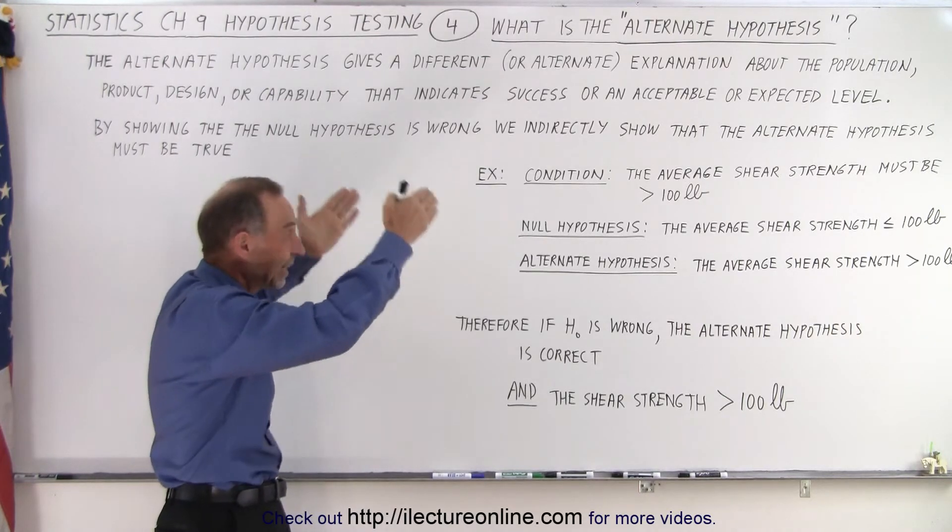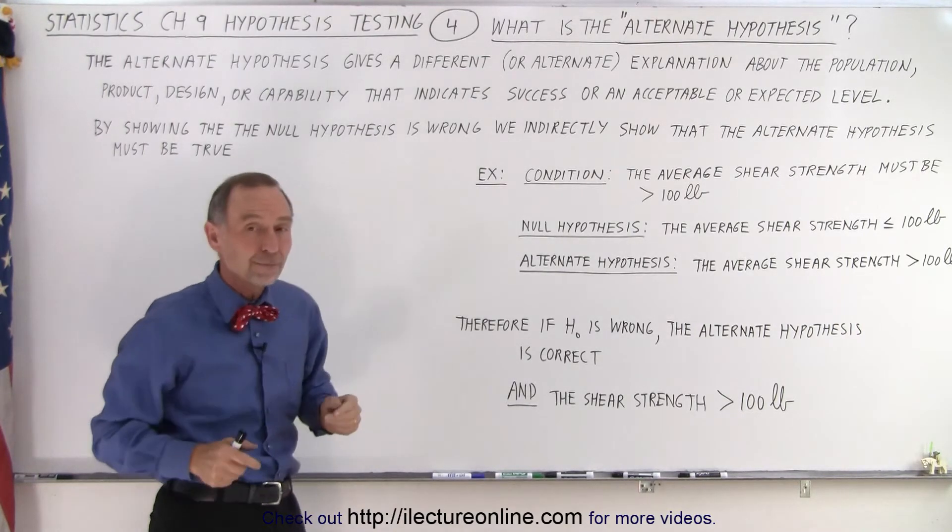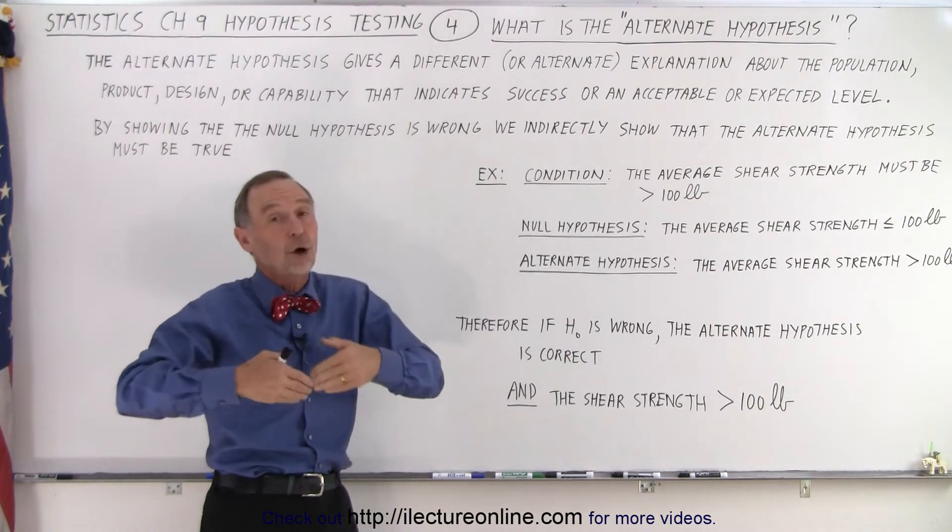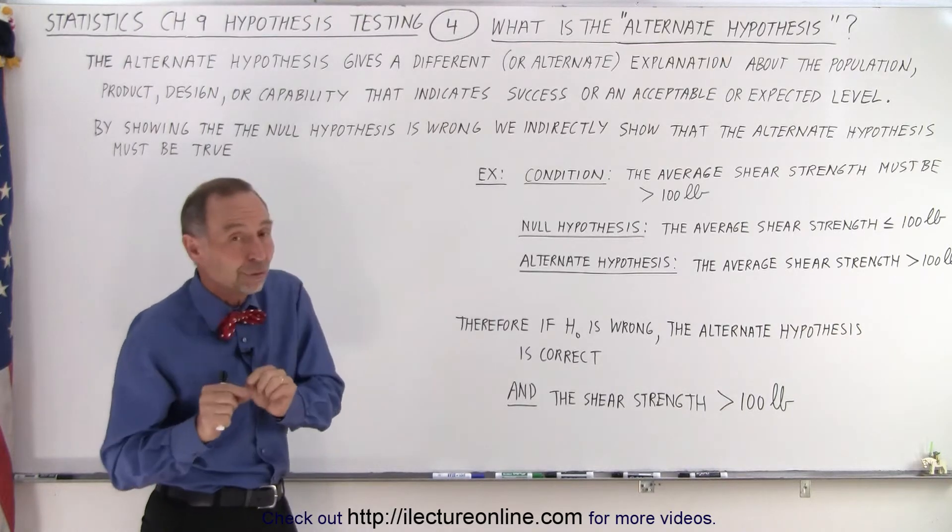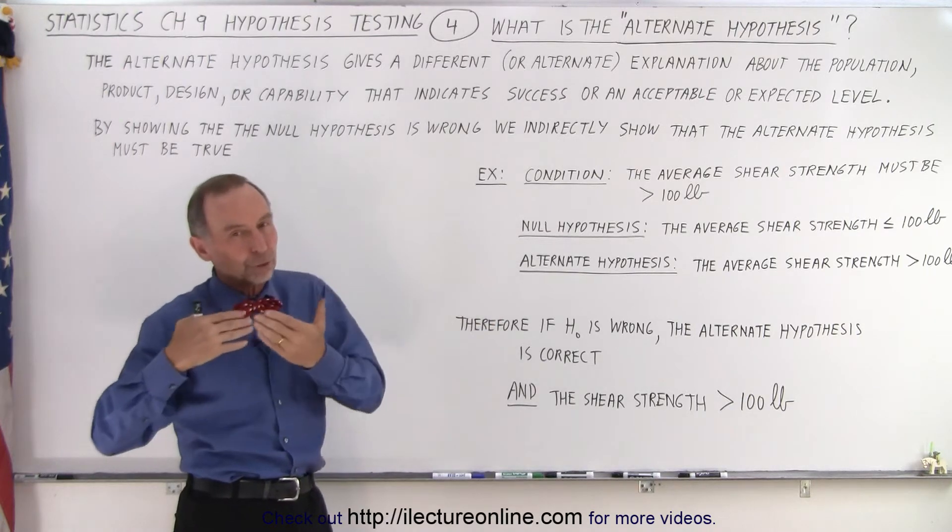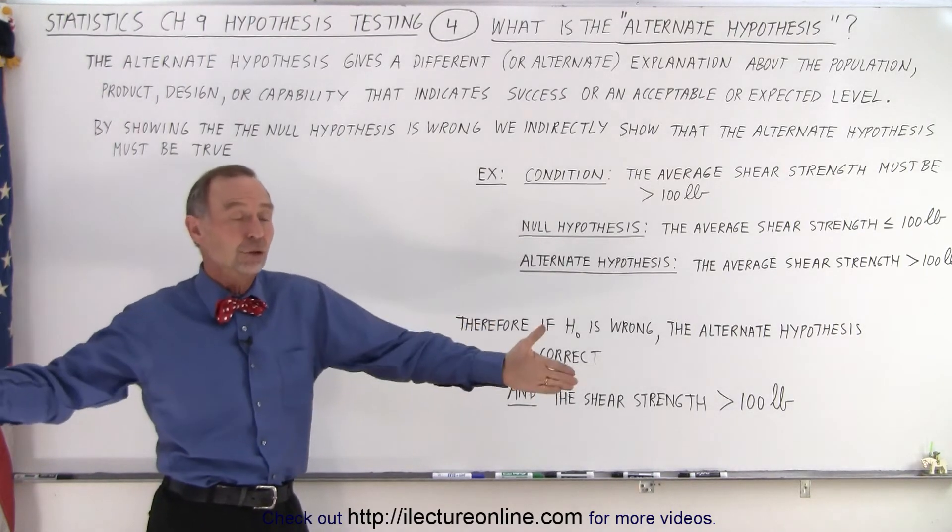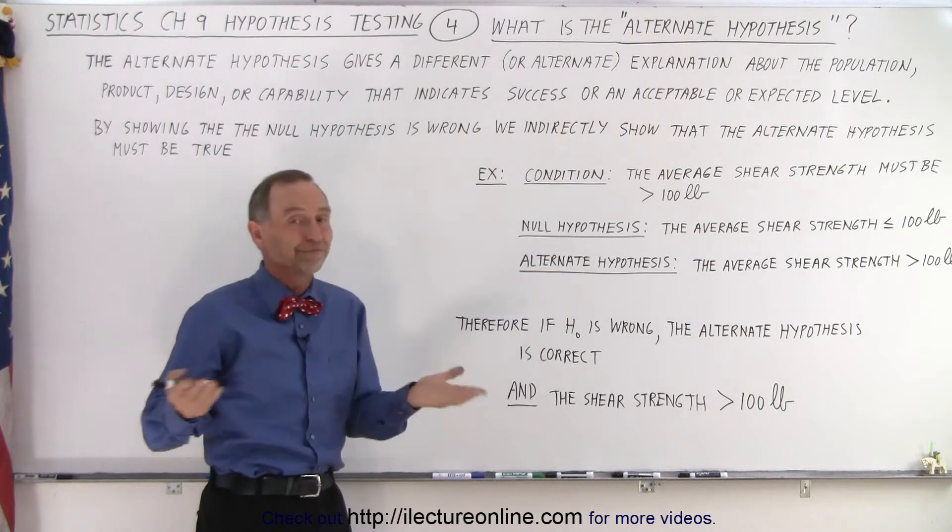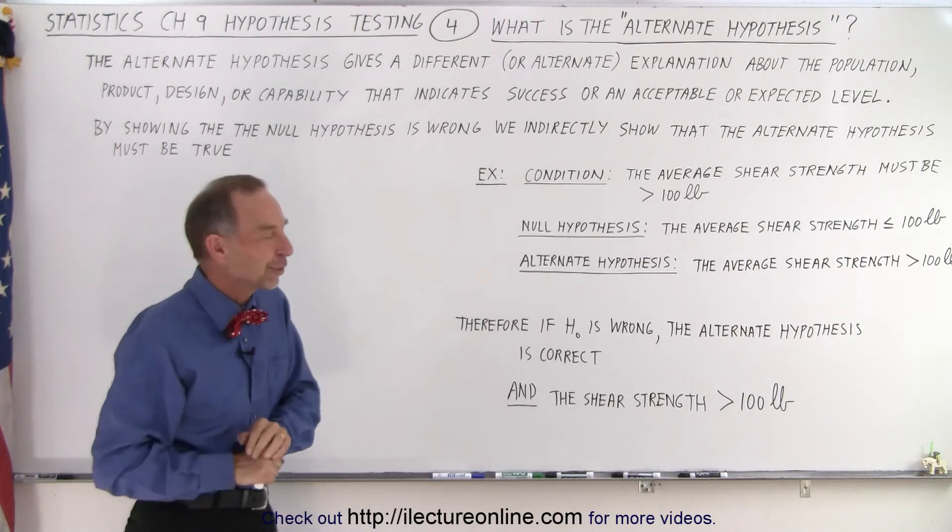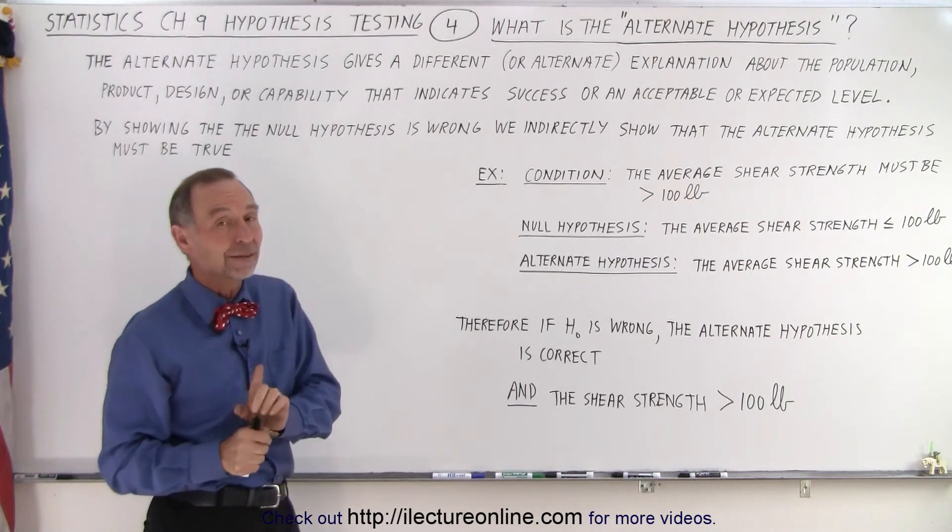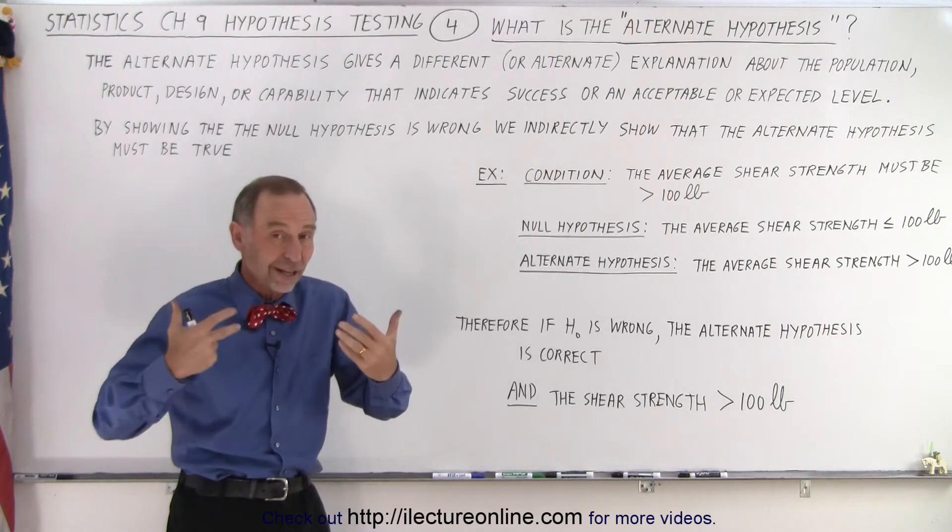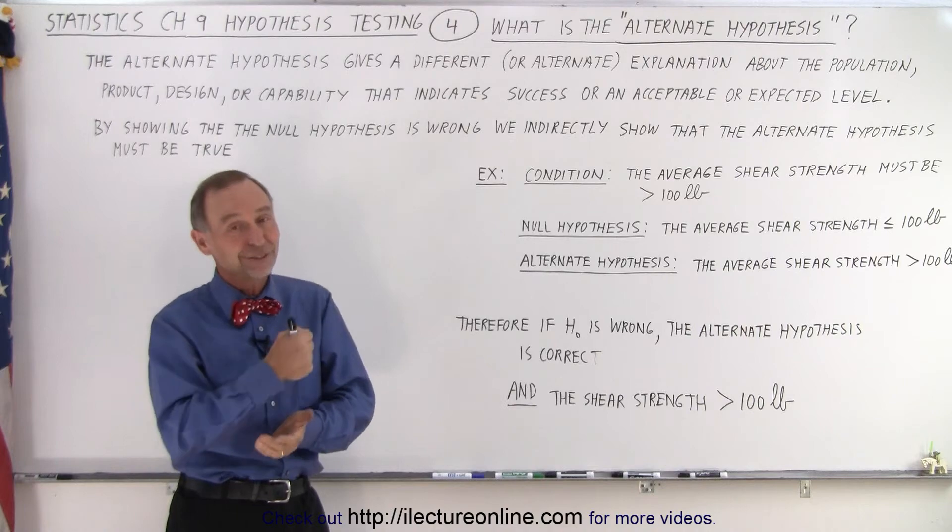So what we're trying to do here is very clearly define what these things mean—what we mean by hypothesis, what we mean by the null hypothesis, what we mean by the alternate hypothesis, and what it means that if we prove the null hypothesis wrong, how the alternate hypothesis is therefore correct and therefore the product is good or the population meets the expected value. That's what this is all about. Now how to do that? Well, that comes in the future. We have some videos ready for you, but this is how we need to look at these concepts and these definitions so we understand what we're doing in the future. And that is how it's done.